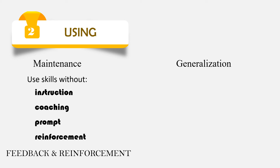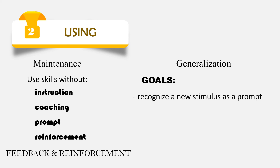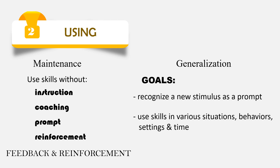Generalization: once a skill is learned proficiently, it should be available for use in any appropriate situation. The goals of generalization are for the learner to recognize a new or different stimulus as a prompt to apply the learned skills, and to use the acquired skills in various situations, behaviors, settings, and time. The ability to apply generalization is the major indicator of learning.